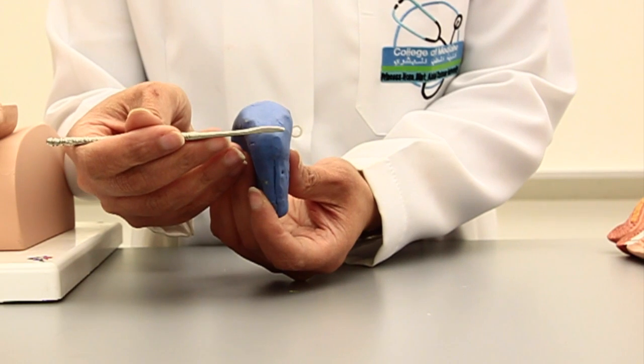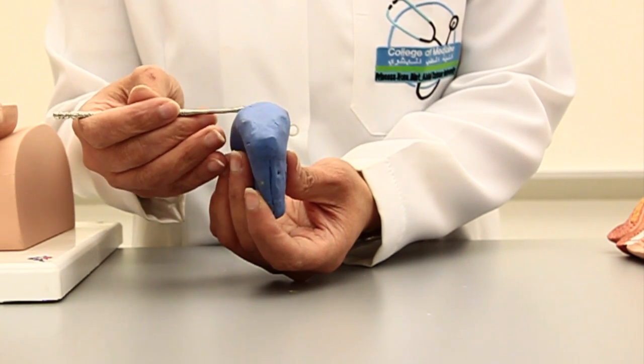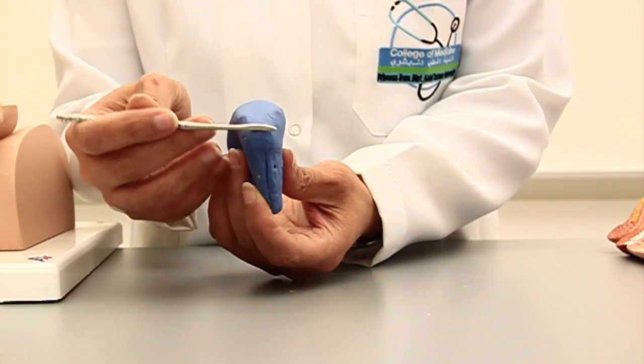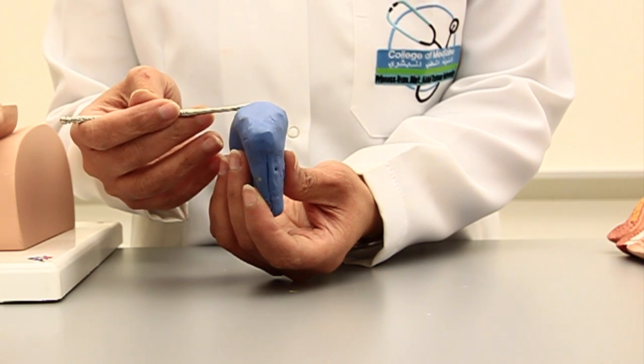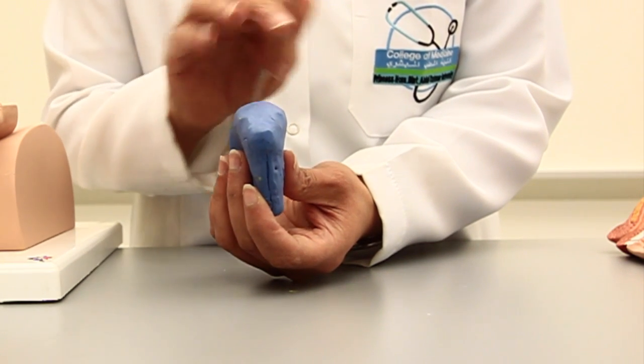So the surface on which I'm running my probe is the superior surface or superior wall. It's also known as the fundus of the bladder because it's like a dome.